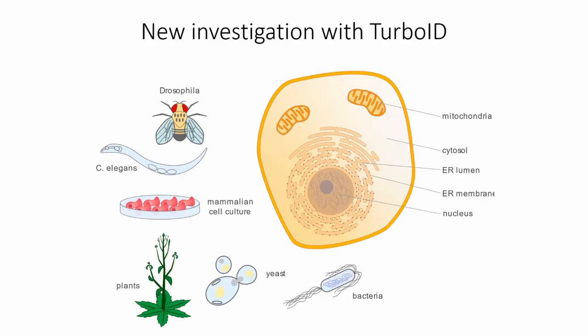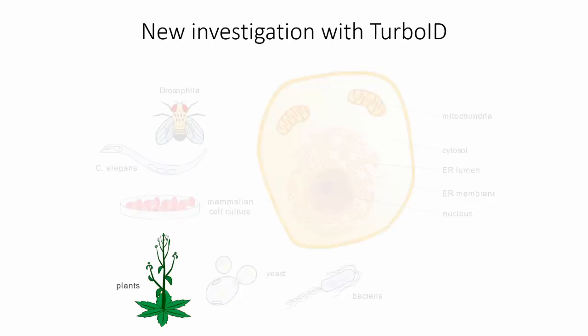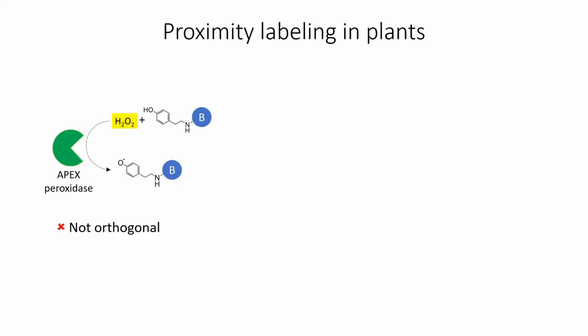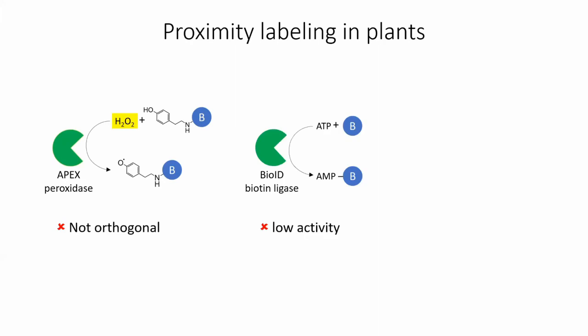One area where these enzymes have proven very useful is for proteomic mapping in plants. Proximity labeling has gotten a slow start in plants: peroxidase-based methods like APEX don't work well because plants have many of their own peroxidases that produce high background using the same substrates — in fact, all proximity labeling peroxidases currently in use were derived from plants. There have been a couple of studies using BioID in plants, but the bait protein had to be highly overexpressed and labeling yield was low, resulting in low-coverage proteomes, due to BioID's low catalytic activity at the temperatures at which plants normally grow — below BioID's optimal temperature of 37°C.